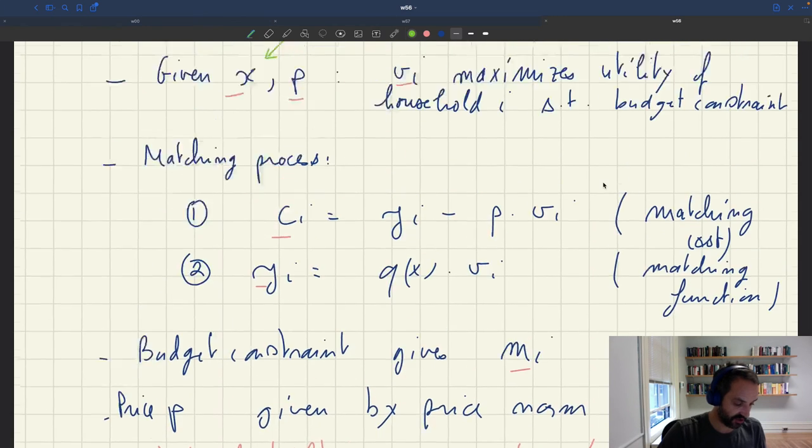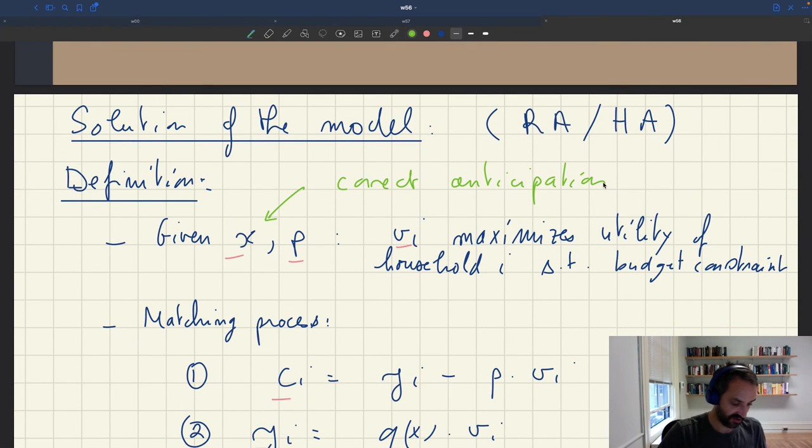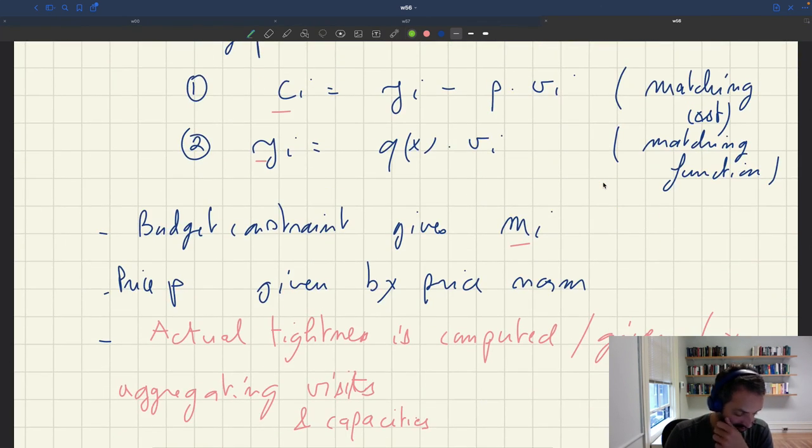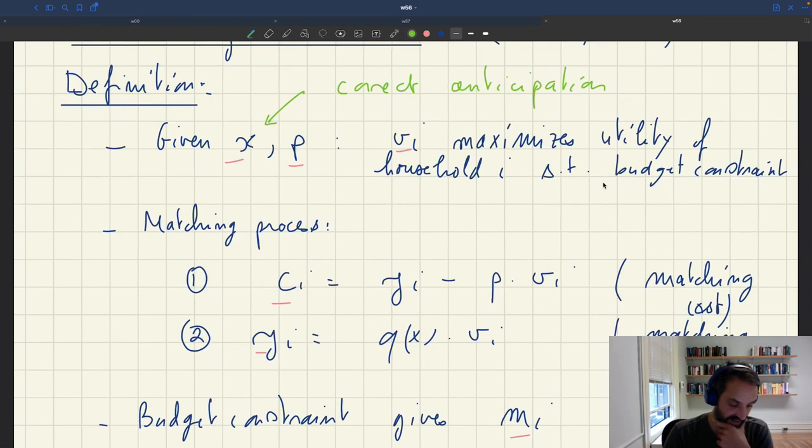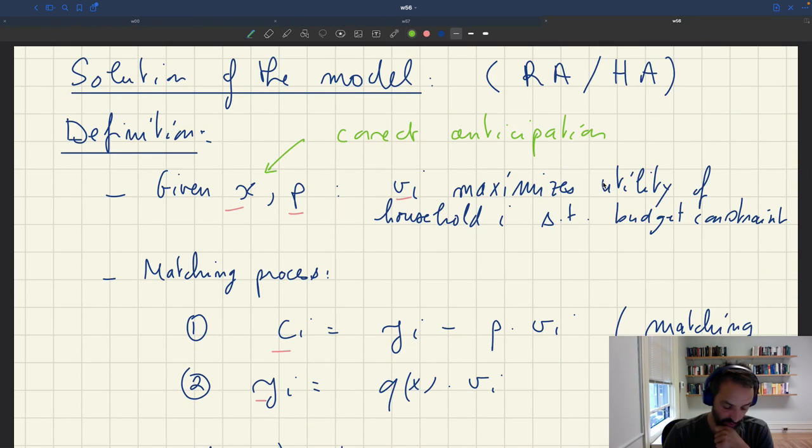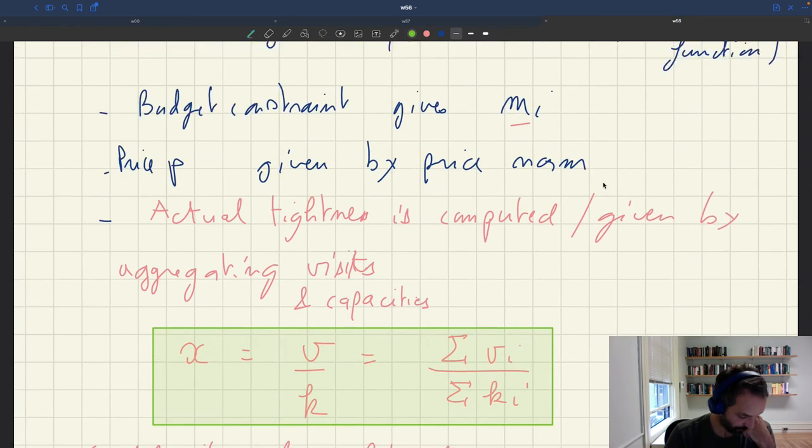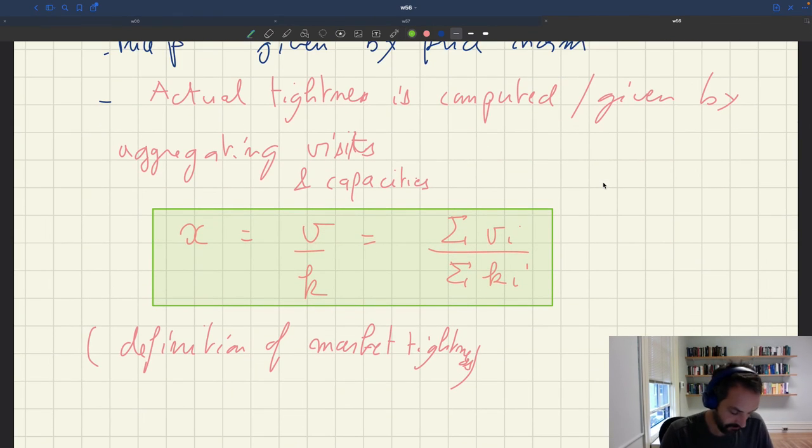So that would be our definition here of, in a heterogeneous agent model. But in the representative agent model, it's exactly the same, except that in that case all the households have the same endowment of wealth and the same capacity. But the solution concept is exactly the same. So I guess that's the solution concept.